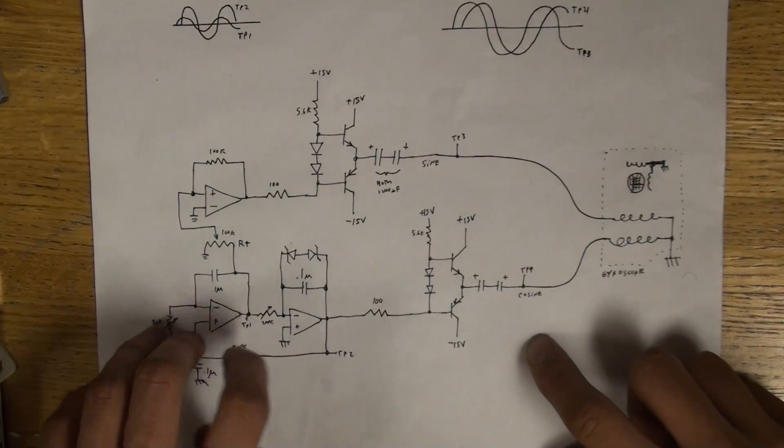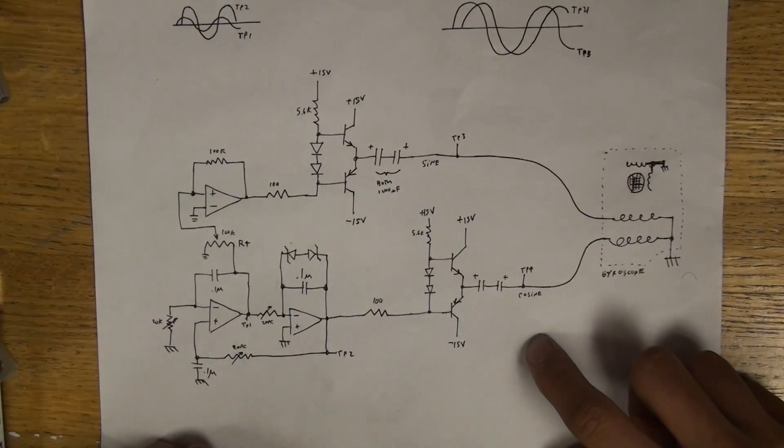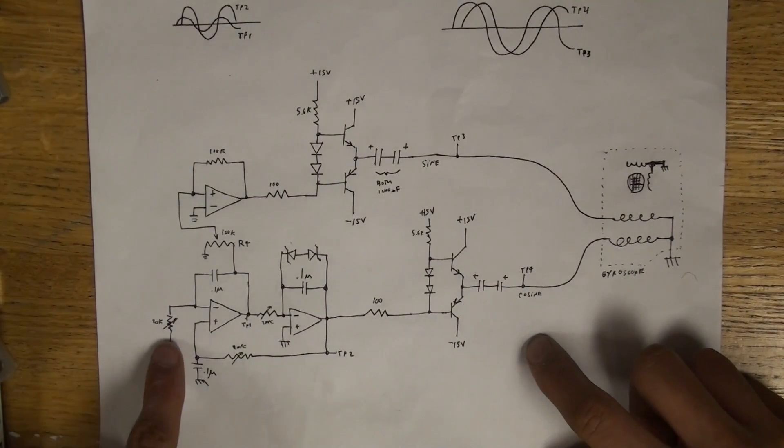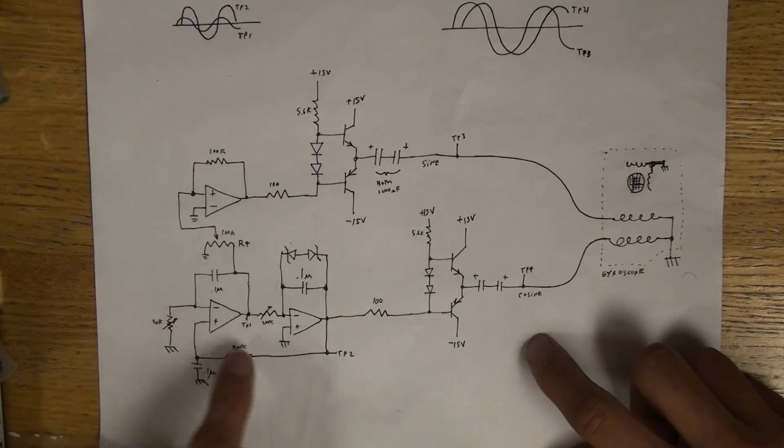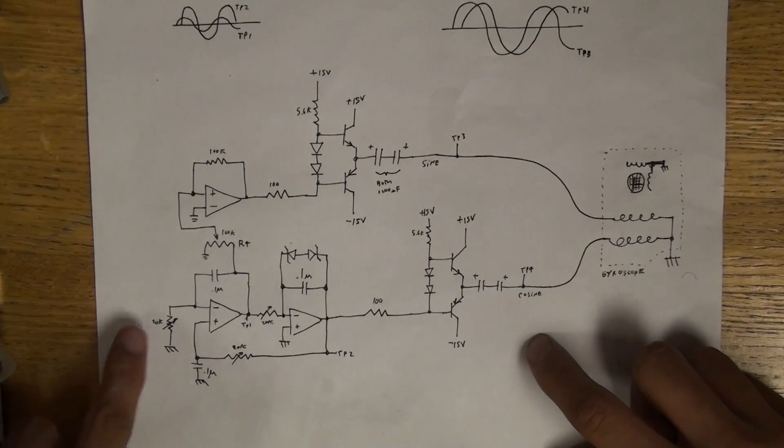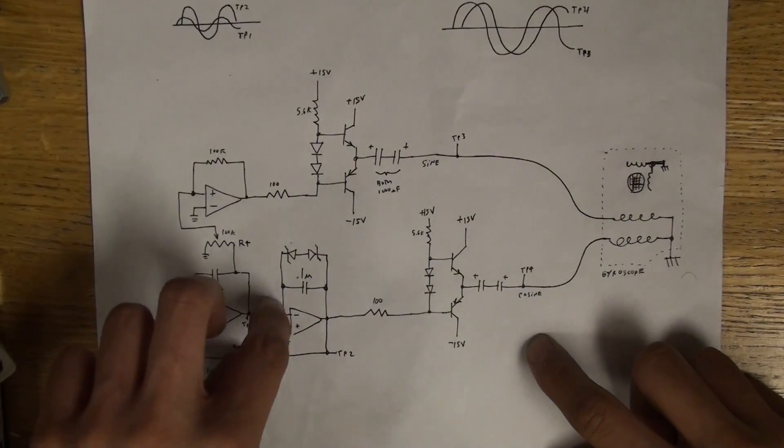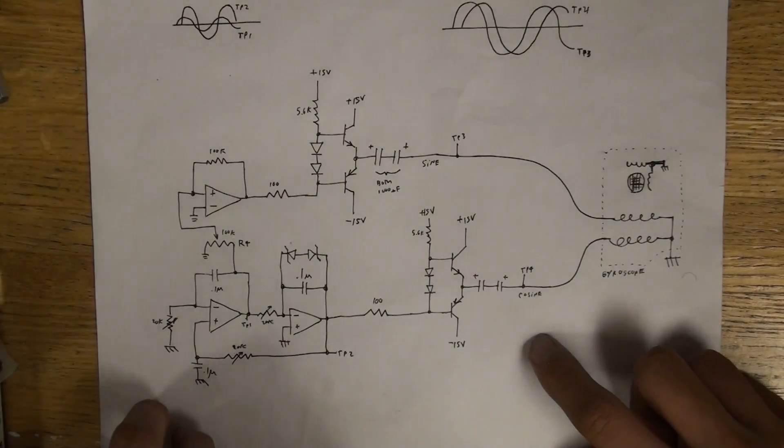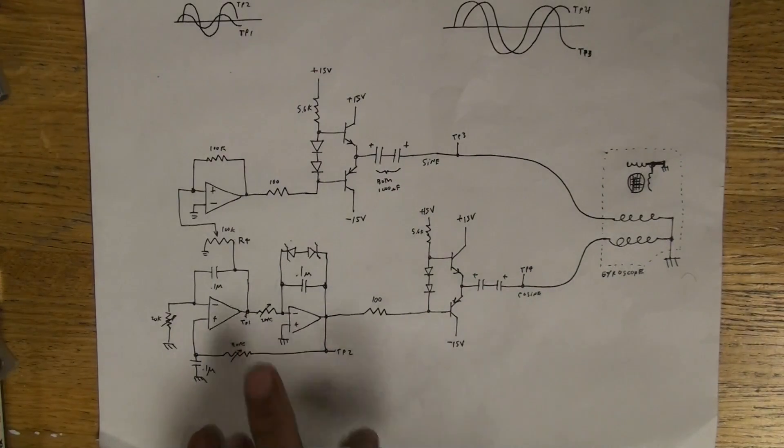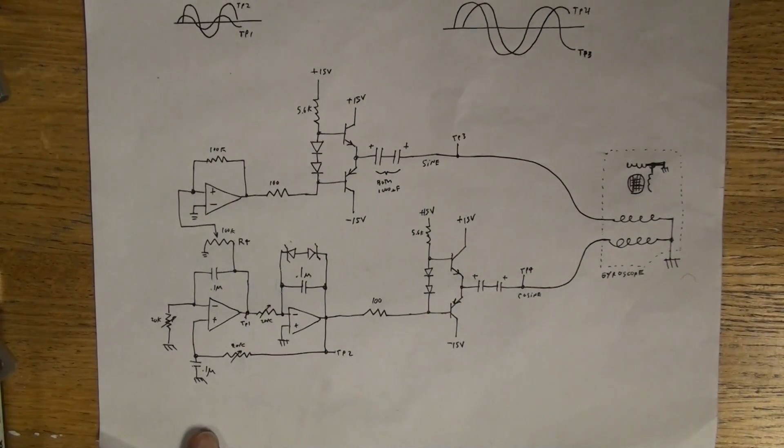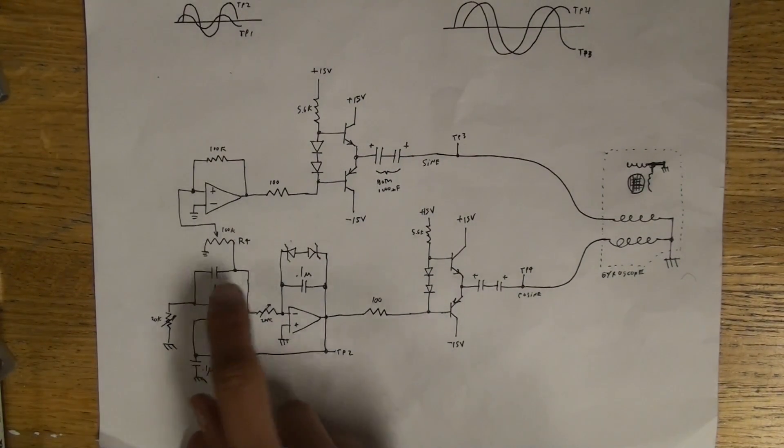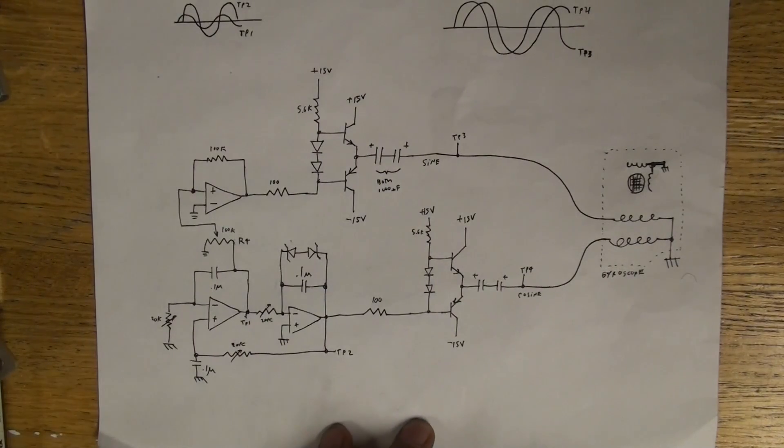That's fed back into the input of this op-amp to keep the oscillation going. And three resistors are chosen such that the oscillator oscillates at the correct frequency, as well as oscillates at all and remains stable. R1 is usually a bit smaller than these two resistors.